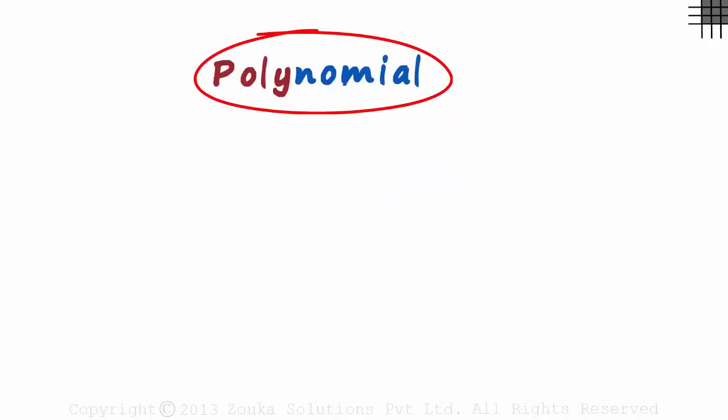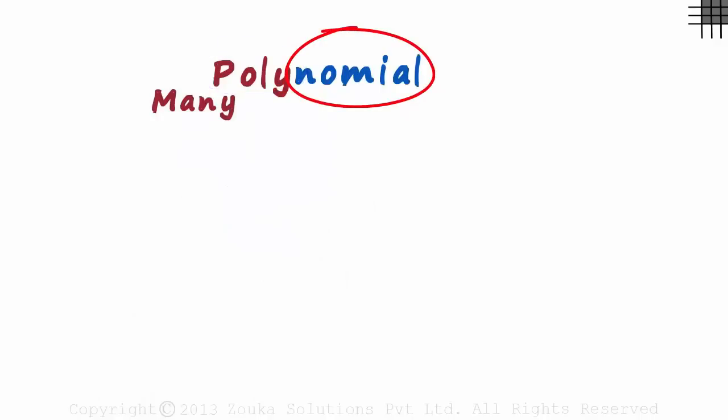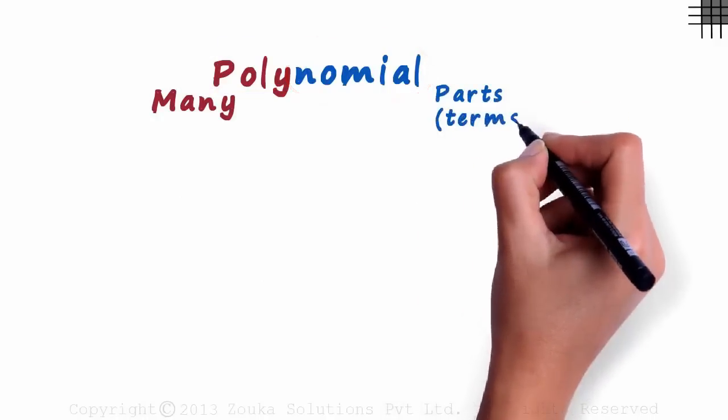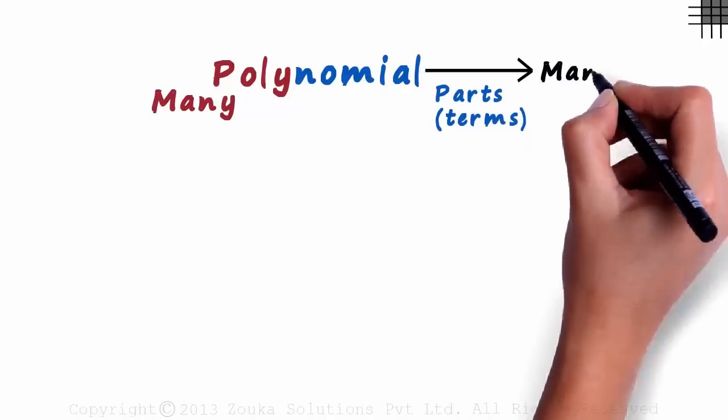As you can see, the word has been colored into two parts. Poly means many and nominal means parts or terms in the case of algebraic expressions. And that's how the word polynomial comes about.